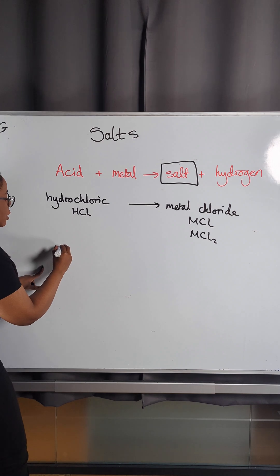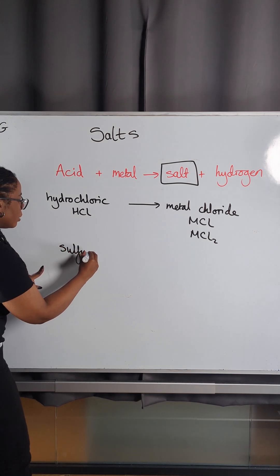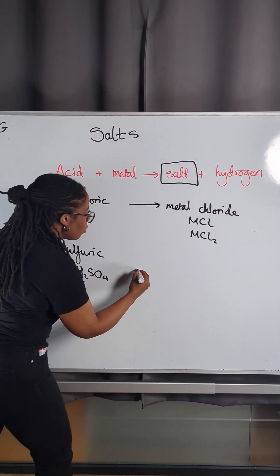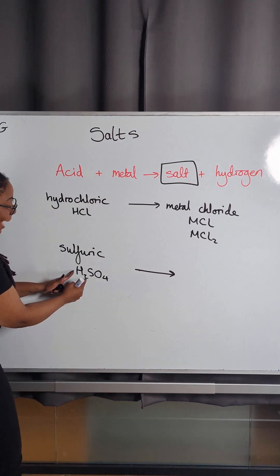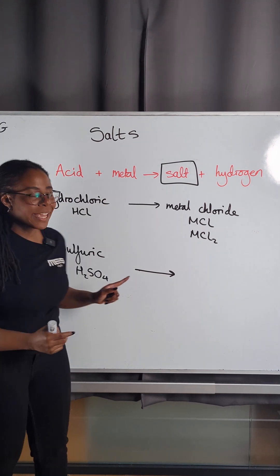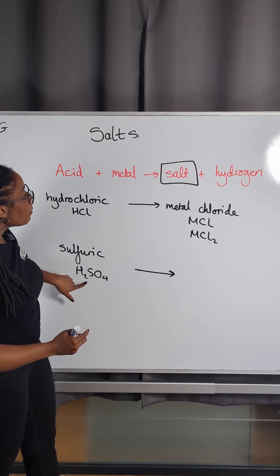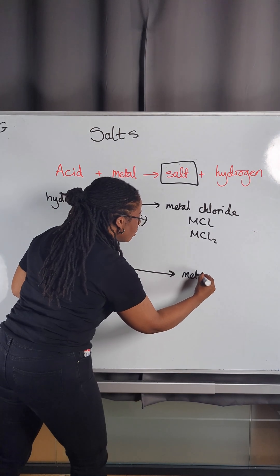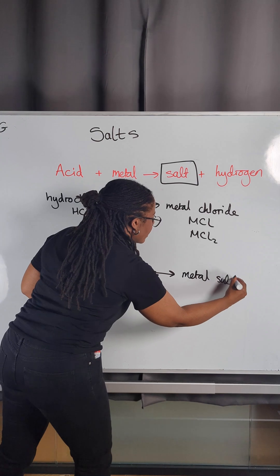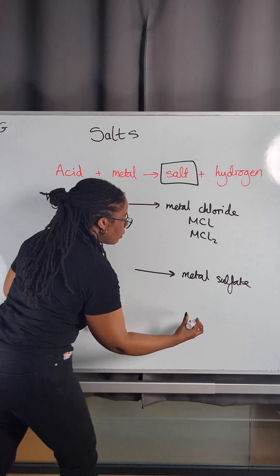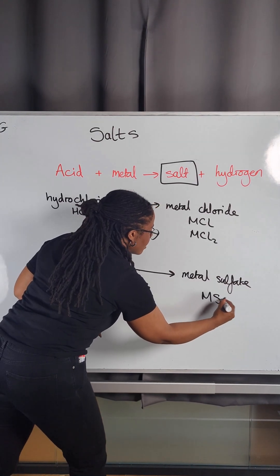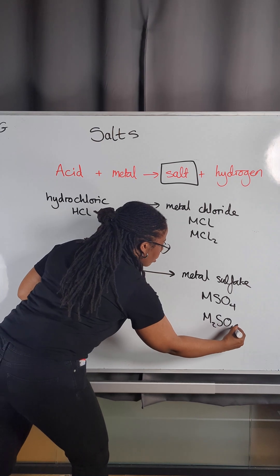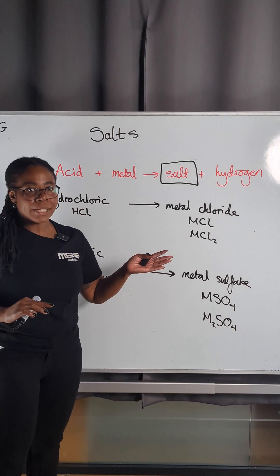If we were to use sulfuric acid, H₂SO₄, then our salt is going to be where the H's from the sulfuric acid are replaced with whichever metal we're using. So our salt would be a metal sulfate — maybe MSO₄ or maybe M₂SO₄, depending on what group the metal is in.